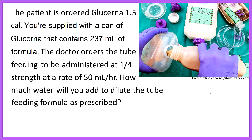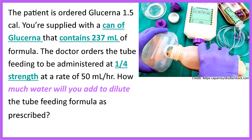Now let's look at our next problem. The patient is ordered Glucerna 1.5 cal. You're supplied with a can of Glucerna that contains 237 ml of formula. The doctor orders the tube feeding to be administered at one-fourth strength at a rate of 50 ml per hour. How much water will you add to dilute the tube feeding formula as prescribed? This problem wants to know how much water we'll add. We need to know how much is in the can — 237 ml — and the strength, which is one-fourth. The rate of 50 ml per hour is a distractor.